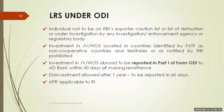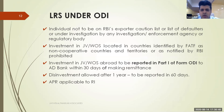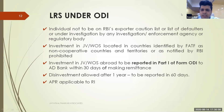A question is raised about the purpose code for purchase of immovable property abroad — specifically whether it should be S0005. The speaker clarifies: if you are clearly remitting money to invest in property, then purpose code S0005 is appropriate. If it is just a transfer to an overseas bank account, a different code for repatriation of capital applies.